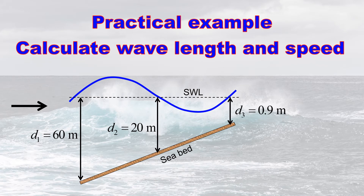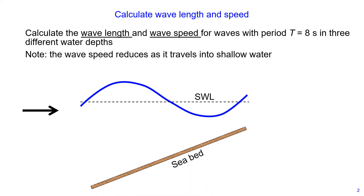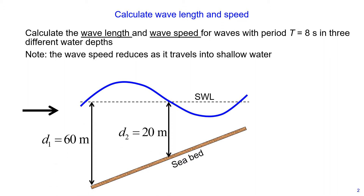We need to calculate the wavelength and the wave speed. In this problem, we need to calculate the wavelength and wave speed for waves with period 8 seconds in three different water depths: 60 meters, 20 meters, and 0.9 meters.